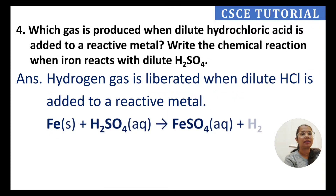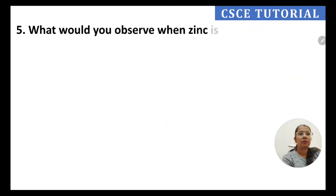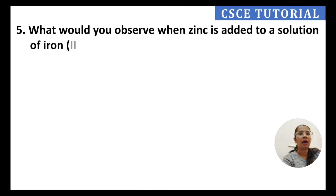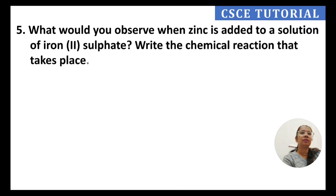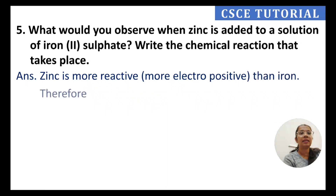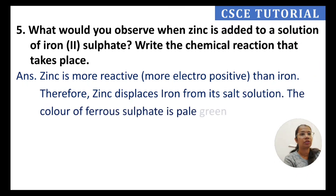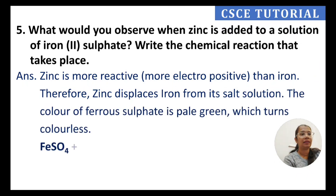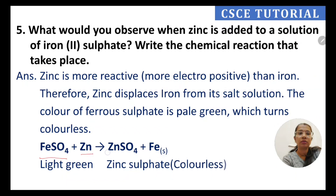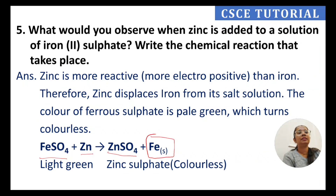Question 5: What would you observe when zinc is added to a solution of iron sulphate? Zinc is more reactive — more electropositive than iron — so zinc will displace iron from the salt solution. The colour of ferrous sulphate is pale green, which turns colorless as zinc sulphate forms and iron is deposited. The solution changes from light green to colorless.